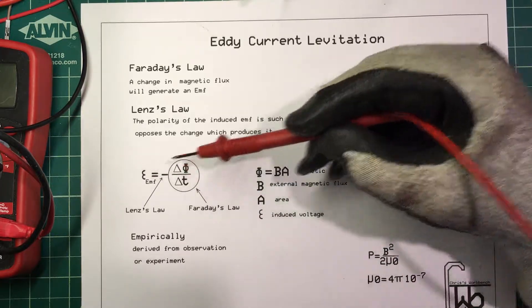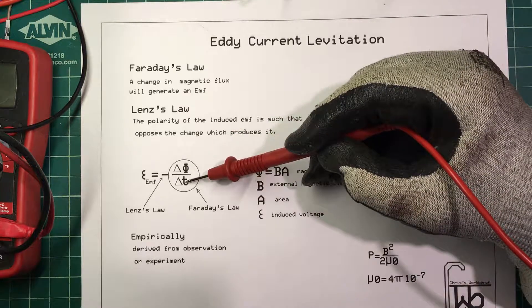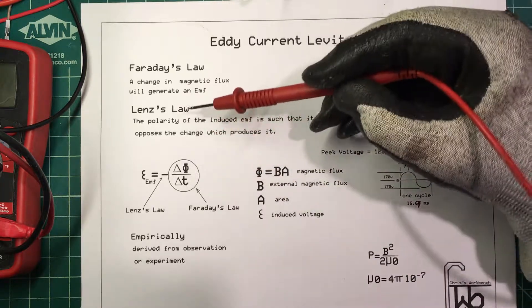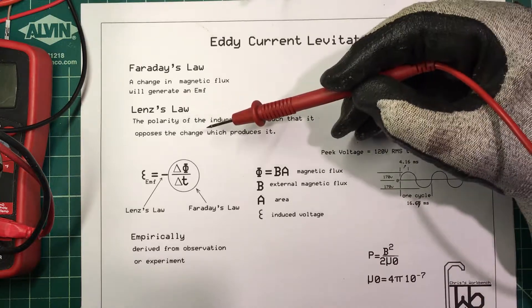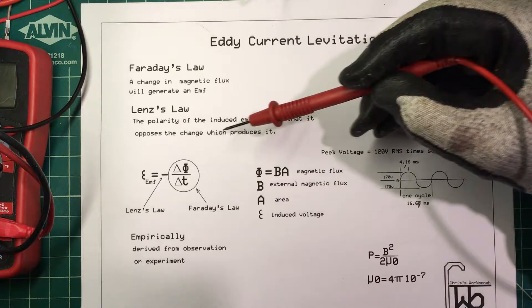It's the induced voltage, and it's equal to the change in magnetic flux over change in time. Now Lenz came along and he said that the polarity of the induced EMF is such that it opposes the change which produces it.